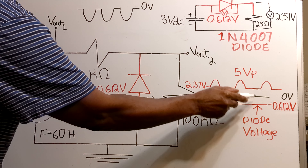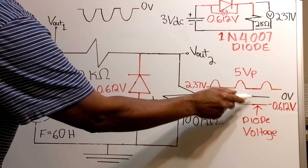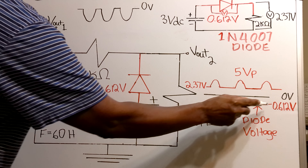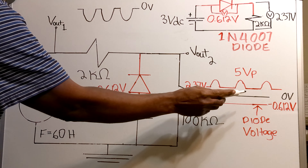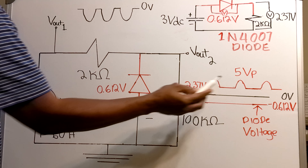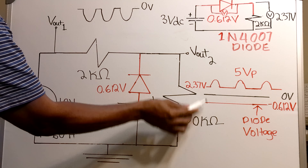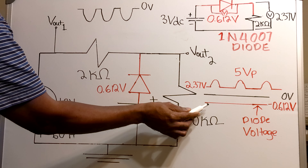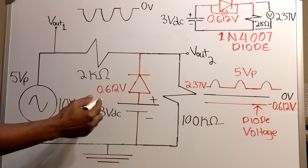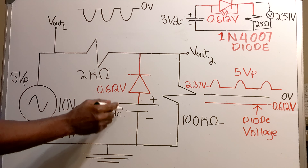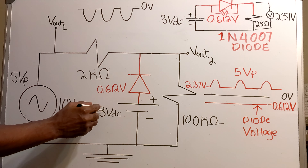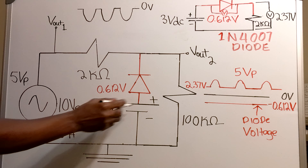The voltage below the 0 volt line is the diode voltage. When you subtract these two voltages — the 3 volt DC source and the diode voltage — you also get the voltage at which the diode goes into reverse bias.